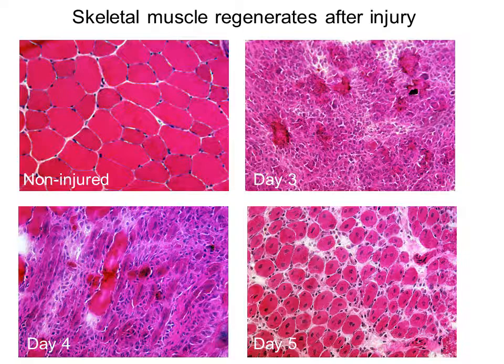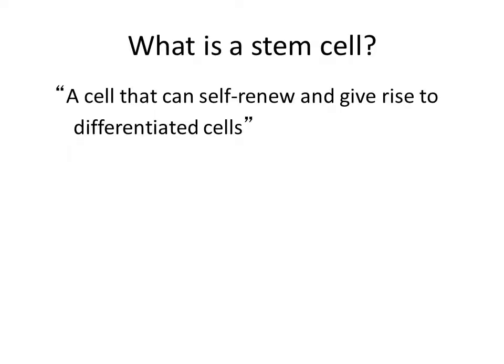Because muscle regenerates, we know that it must contain a stem or precursor cell. We can define a stem cell as a cell that can both give rise to differentiated tissue and can also self-renew. That would give an almost endless supply of cells to replenish and replace the tissue during our lifetime.